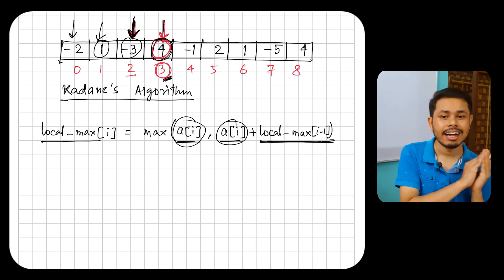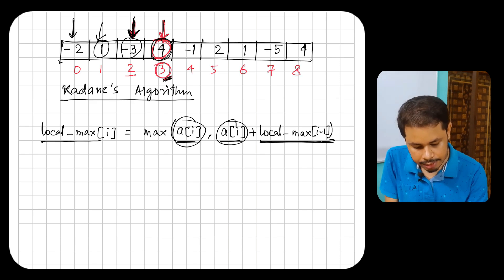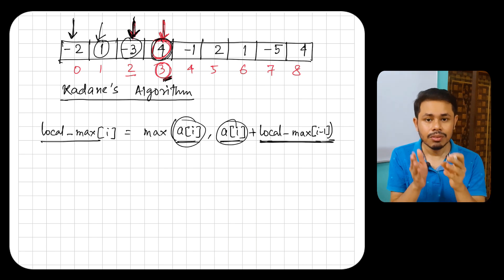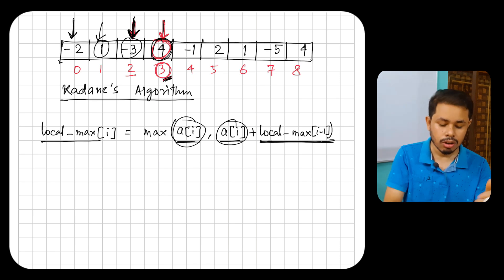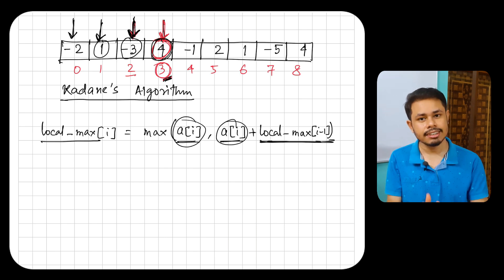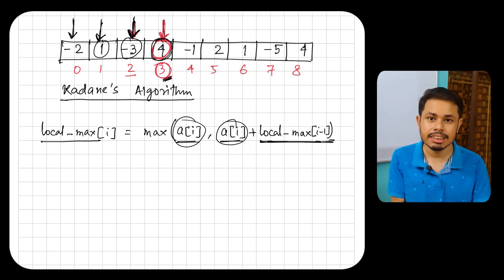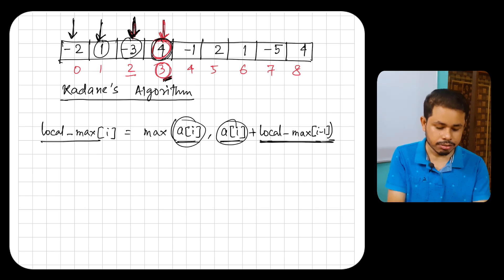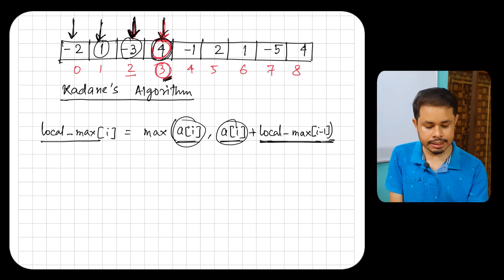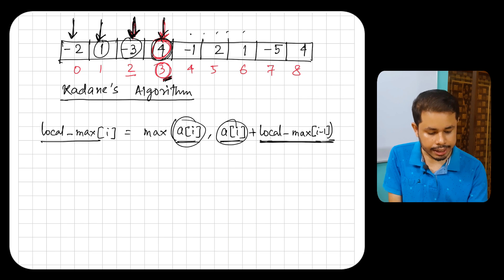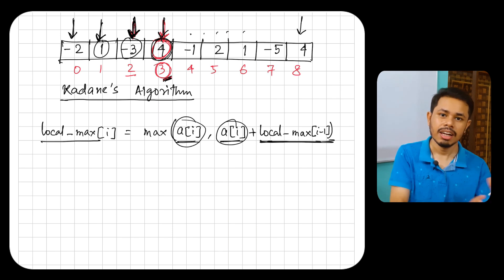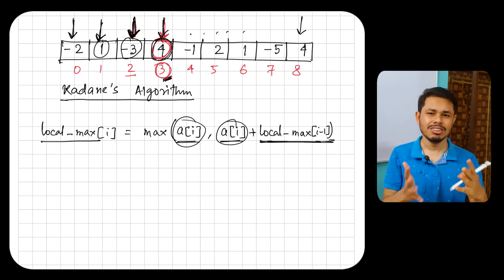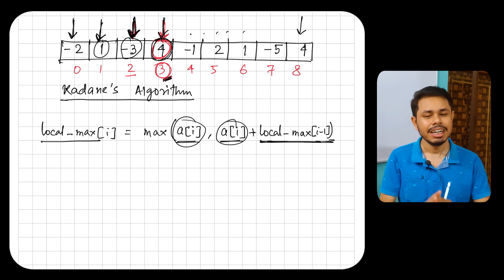Now let's look at the solution from another angle. Once we find the local maximum at index 0, we use it to find the local maximum at index 1. Then index 2, then index 3, and so on until the last index. It's very simple — just two or three lines of code.